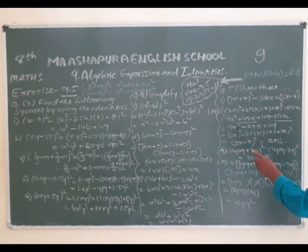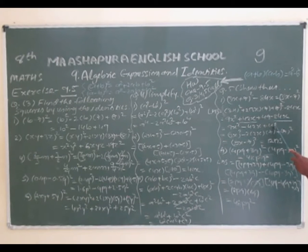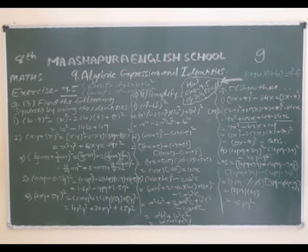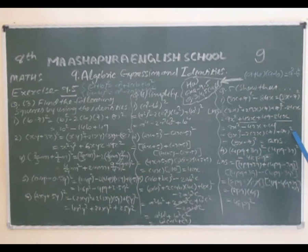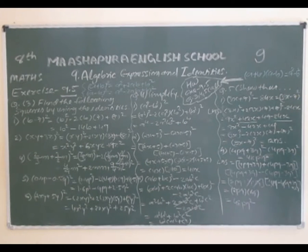Now 9x² - 42x + 49 = (3x)² - 2×3x×7 + 7² = (3x - 7)². So the right-hand side is (3x - 7)². This is the shorter form — the simplified expansion.